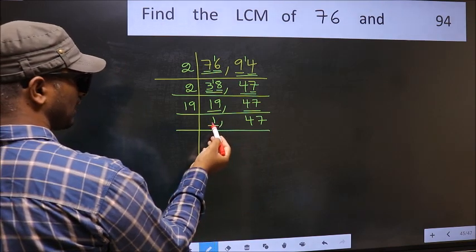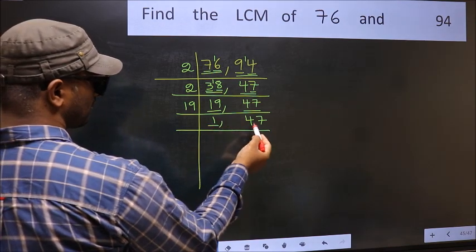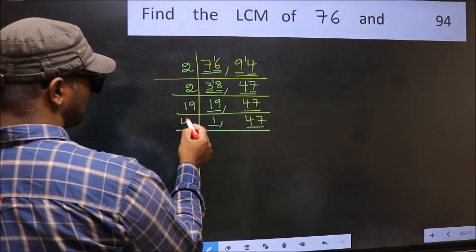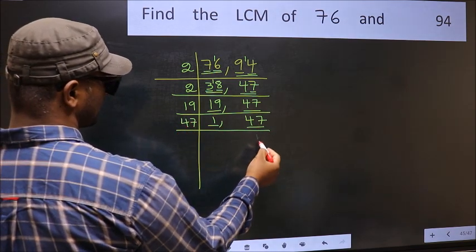Now we got 1 here. So focus on the next number, 47. 47 is a prime number, so 47 once 47.